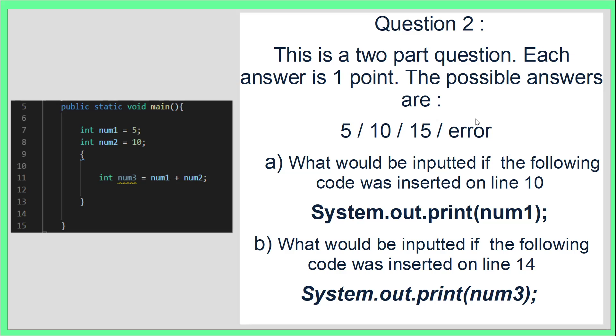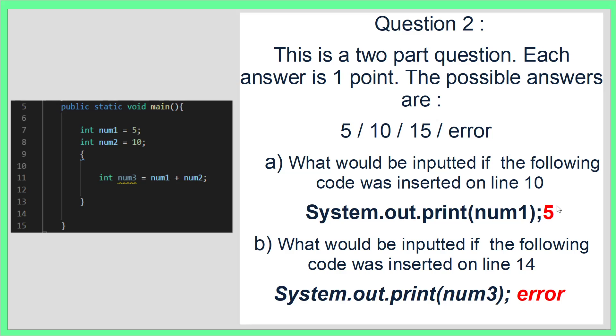Hopefully you've paused the video. The answers are: the first one is 5, and the second one is error. If you got that right, well done. If you got it wrong, you need to look at my video showing how scope is affected within Java, because there will be many MTA questions regarding variable scope.